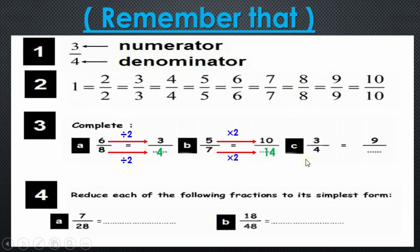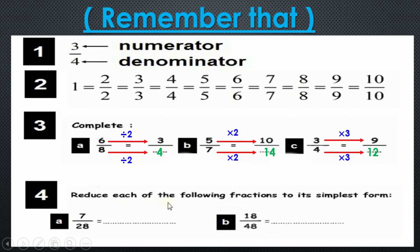Fourteen — bravo! Question number c: three over four equals nine over what? The arrow goes to the empty place. Three became nine — we did times three. Just as we do times on top, we do times on the bottom. Four times three equals what? Well done — equals twelve. Bravo!